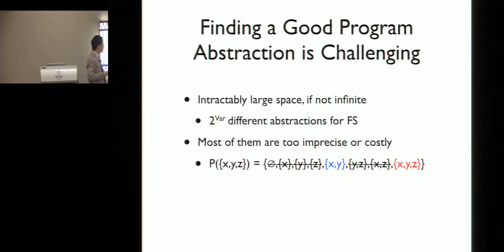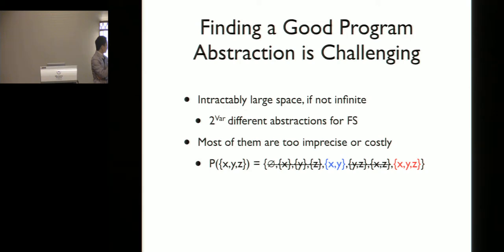For example, in flow-sensitivity with our example program, we have eight different abstractions. Among them, only the two cases {X, Y} and {X, Y, Z} succeed in proving the assertion. But the last one is not ideal because it simply means applying flow-sensitivity to all variables in the program.